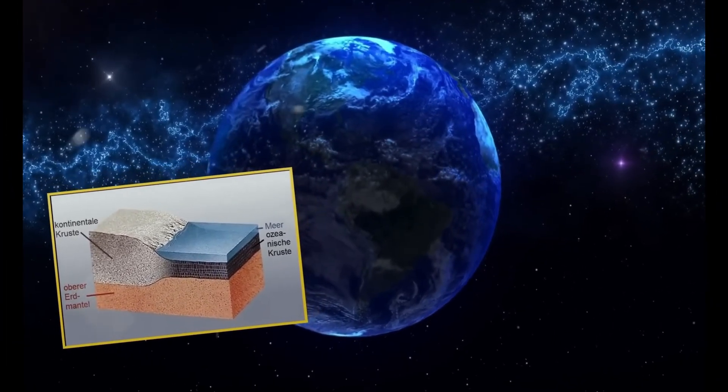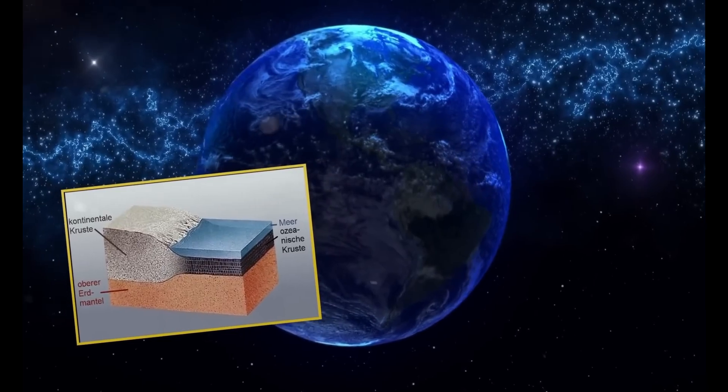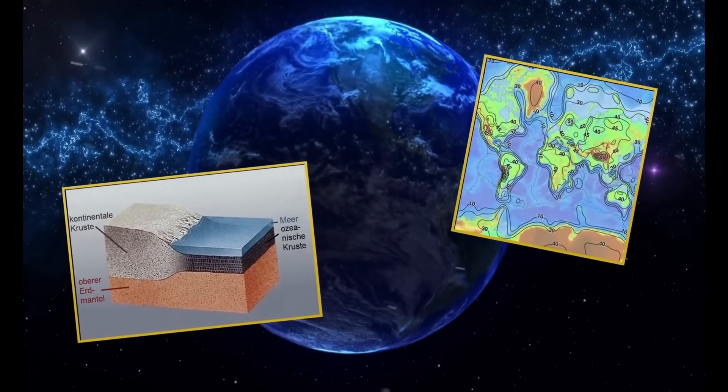The solid crust of the Earth is dominated by two types of plates: the so-called continental plates, which consist of silicate-rich and granitic rocks, and the oceanic plates, which are much thinner and consist of heavier basaltic rocks. Most researchers think that the continents were formed from the ocean crust — that is, the ocean crust is the primordial crust of our planet.